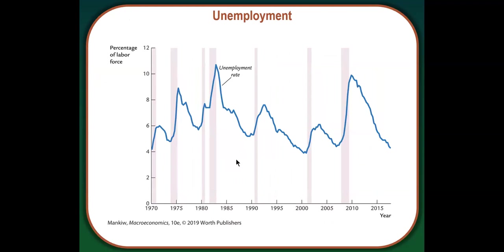If we look at unemployment, we can see that it also fluctuates a lot in the short run and tends to go up during recessions — shown by the shaded regions. In the 1980s, we had really high unemployment for a long time. We had two quick recessions in the early 1980s and unemployment continued to rise. But as the economy got stronger in the late 1980s, unemployment fell significantly — from about 11-12% in 1984 down to below 5% by 1990. During the Great Recession, unemployment peaked at about 11% again, but since then it dropped significantly, reaching 3.5% in February 2020 because the economy was doing really well.